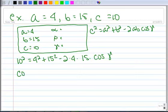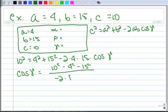So we know, based on the previous example, I'm going to move through this a little bit more quickly, that the cosine of gamma is going to be equal to 10 squared minus 4 squared minus 15 squared all over negative 2 times 4 times 15.